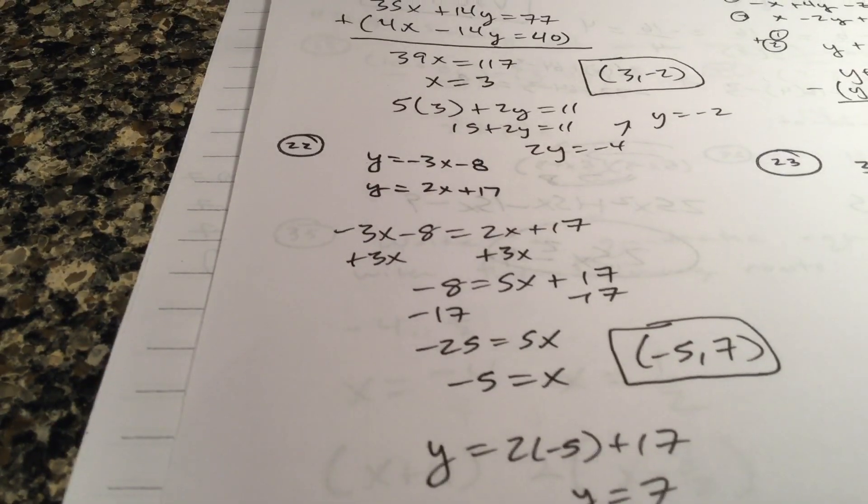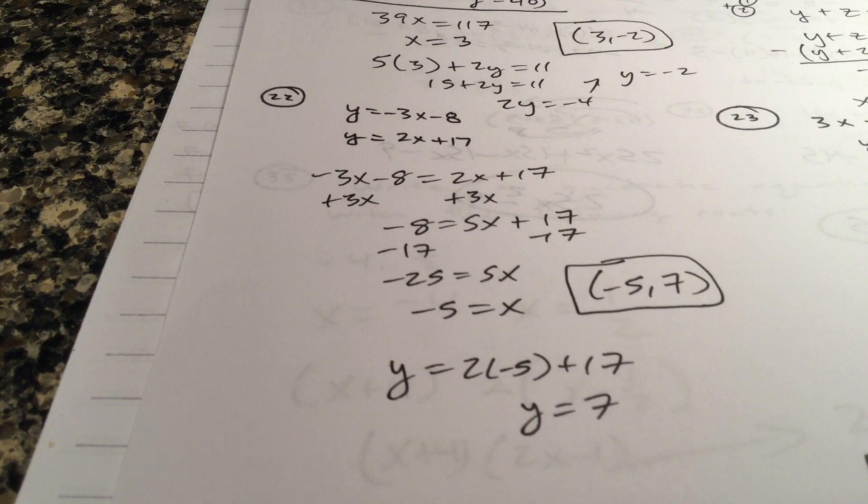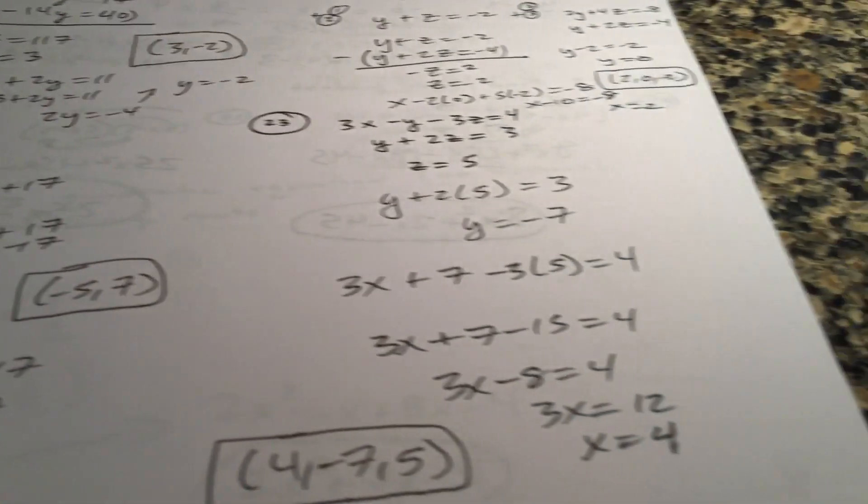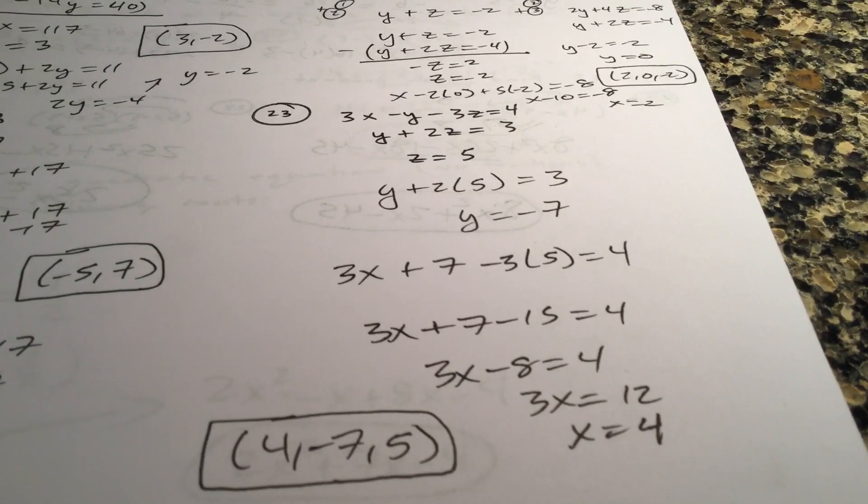Literally set them both equal to each other. You get x is negative five, plug that in for x, either equation, y is seven. Here, I want to do A inverse B. I mean, you know what z has worked from the bottom, go to the top. There you go.